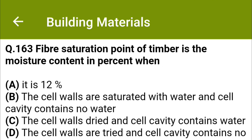Fiber saturation point of timber is the moisture content in percent when: option A it is 12%, option B the cell walls are saturated with water and cell cavity contains no water, option C the cell walls are dried and cell cavity contains water, option D the cell walls are dried and cell cavity contains no water. The correct answer is option B: the cell walls are saturated with water and cell cavity contains no water.